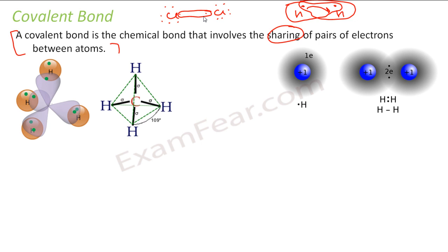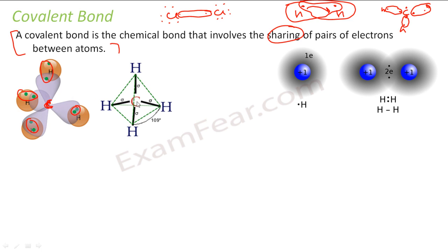Let's take more examples. This is methane — carbon has 4 electrons and wants to form an octet of 8 electrons, so it needs 4 more. Nobody is ready to give 4 electrons, so carbon forms a covalent bond with 4 hydrogens, each sharing one electron. If you see the structure, there are 4 sigma bonds between carbon and the hydrogens. We have discussed sigma and pi bonds in previous videos.